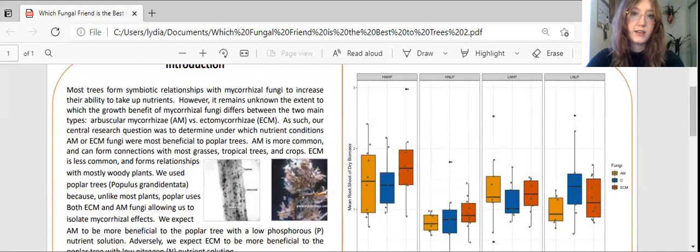In our research, we looked at arbuscular mycorrhiza, also known as AM, and ectomycorrhiza, also known as ECM, in the extent that they helped poplar trees absorb nutrients.